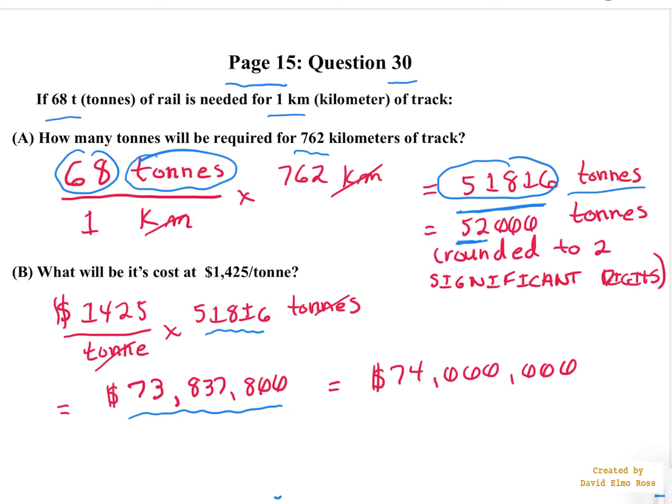But our final answer, again, has to be rounded to two significant digits, or the value that we started with for the number of tons only had two significant digits. So our answer is going to be $74 million for 762 kilometers of track.